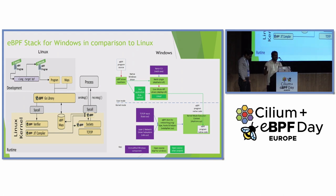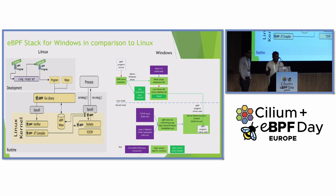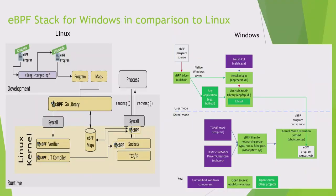One key difference is the eBPF shim layer sitting in the kernel. Windows doesn't natively understand TC hook or XDP hook the way Linux kernel does. So we need an abstraction layer to convert TC eBPF programs or XDP programs to Windows kernel native types. For example, in TC we have the SKBuff structure, but Windows doesn't know about SKBuff. This shim layer converts SKBuff to the Windows native buffer type — NetBufferList. When a packet hits the layer 2 driver layer, it calls the eBPF shim extension for XDP hook or TC hook, which invokes the actual XDP or TC eBPF program.